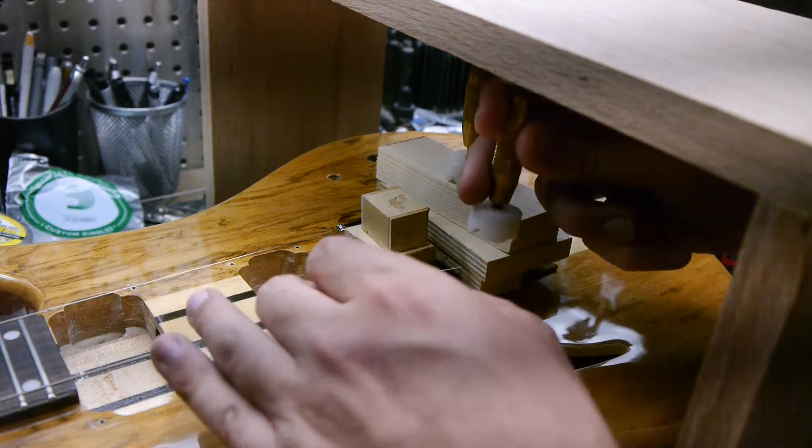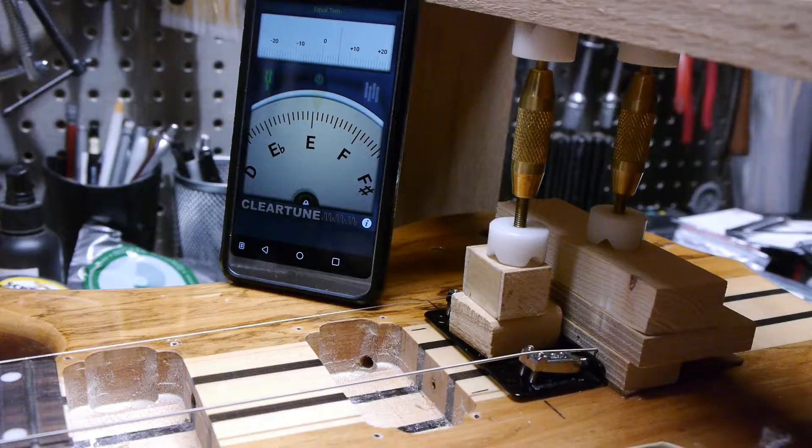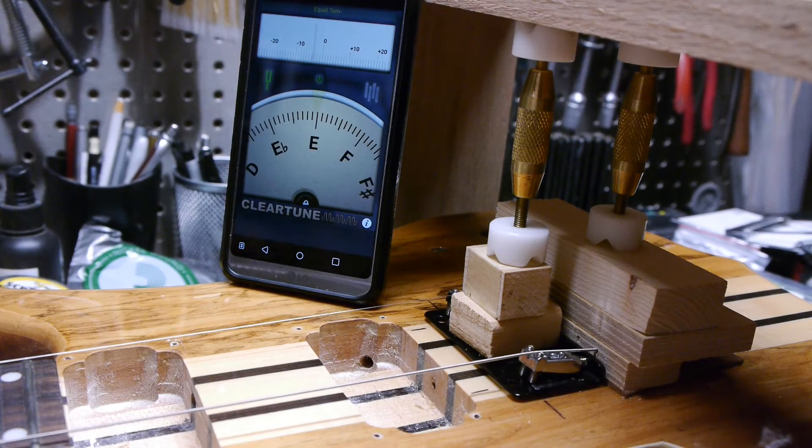And get a turnbuckle in place. That's going to lock your bridge right down where it is. With both turnbuckles on, we can get it to pitch and check the intonation.